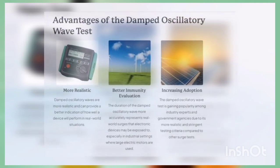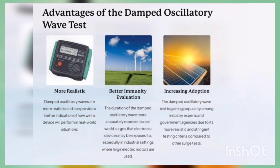The advantages of the damped oscillatory wave test: first, it is more realistic — damped oscillatory waves provide a better indication of how well a device will perform in a real-world situation. Second, better immunity evaluation — the duration of the damped oscillatory wave more accurately represents real-world surges that electronic devices may be exposed to, especially in industrial settings where large electric motors are used. Third, increasing adoption — the damped oscillatory wave test is gaining popularity among industrial experts and government agencies due to its more realistic and stringent testing criteria.